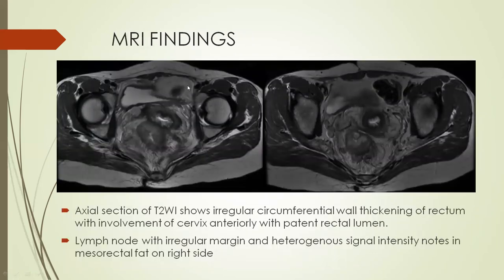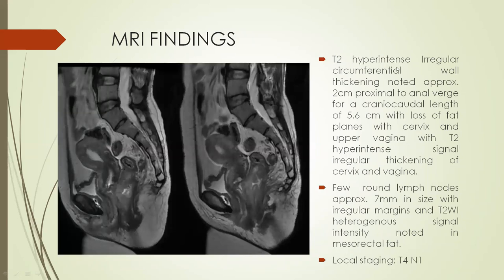On MRI, T2-weighted images show circumferential thickening of the rectal wall with involvement of the anterior wall of the cervix anteriorly. However, the lumen of the rectum appears patent. Few lymph nodes with irregular margins and heterogeneous signal intensity are noted in the mesorectal fat on the right side. On sagittal section, T2-hyperintense irregular circumferential wall thickening is noted approximately 2 cm from the anal verge for a length of approximately 5.6 cm, with loss of fat plane with the cervix and upper vagina anteriorly. Few round lymph nodes with heterogeneous signal intensity and irregular margins are noted in the mesorectal fat, which are suspicious. The local stage of CA rectum was determined to be T4N1.